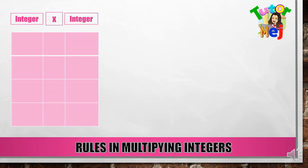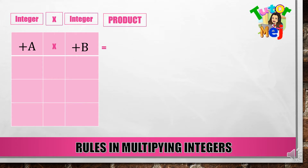Rules in Multiplying Integers. Gawa tayo ng ating table. Ang unang column ay para sa ating unang integer, ang pangalawa ay para sa multiplication symbol, at ang pangatlo ay yung pangalawang integer. May positive A tayo multiplied to positive B. Ano ang ating magiging product? Ito ay equal to — take note — positive times positive, ang result nito ay dapat positive. Then multiply A and B, kaya ang result ay positive AB.